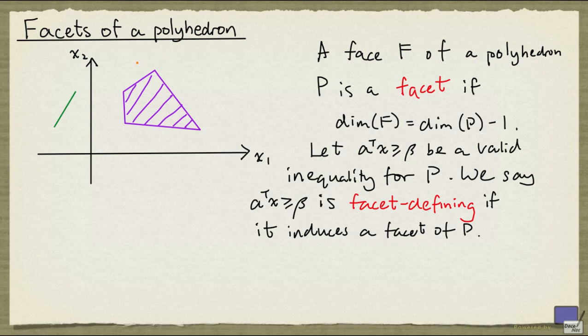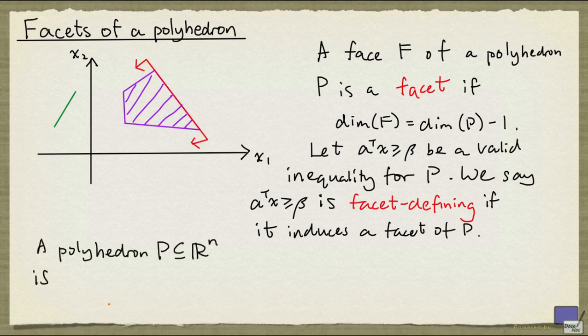So for example here, an inequality that looks like this is facet-defining. A polyhedron P in R^n is full-dimensional if the dimension of P is equal to n. Clearly n is the largest possible value for the dimension of any polyhedron.